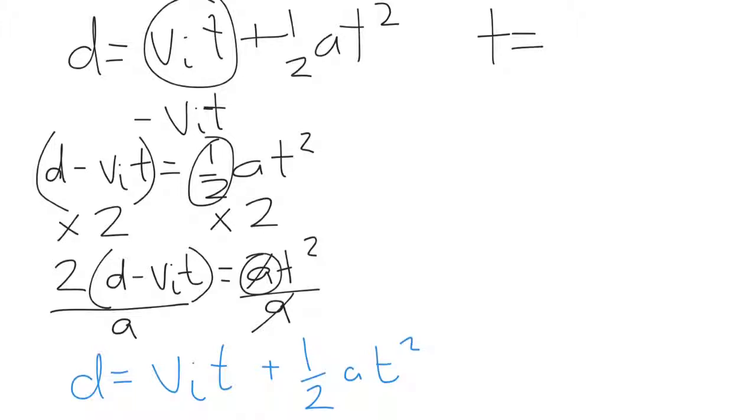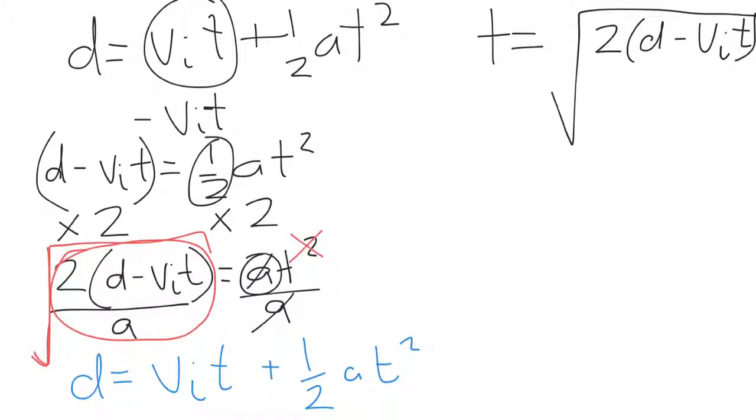So there's one more rearrangement we have to do, which is to get rid of that square. So I'm going to do this in just a sneaky, quick way. As you saw earlier, if we're getting rid of the square, we throw the whole square root over everything. So that square roots everything on that side. And so we're left with the final rearrangement there of t equals square root of 2 times d minus vᵢt divided by a. And that's how you rearrange that one.